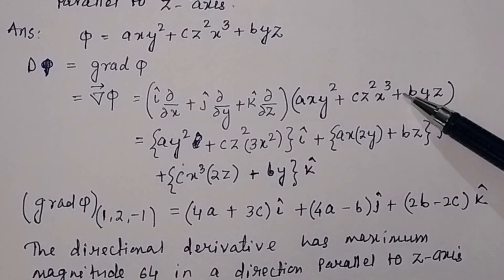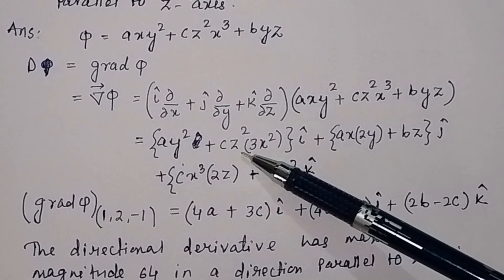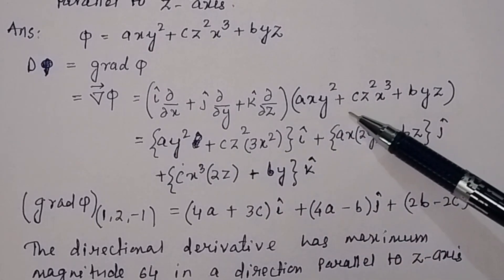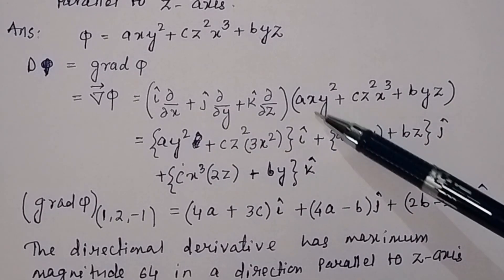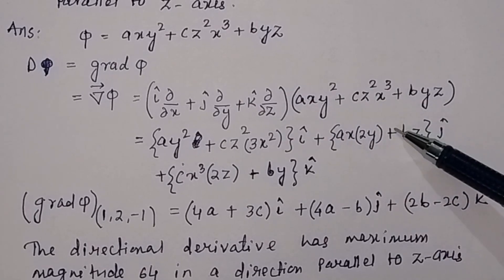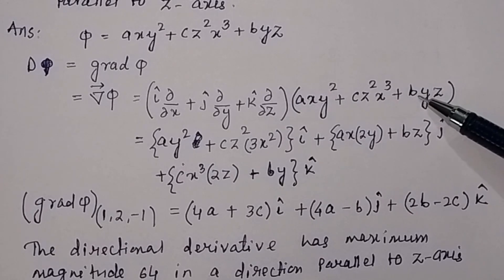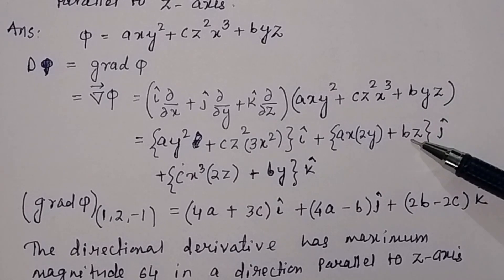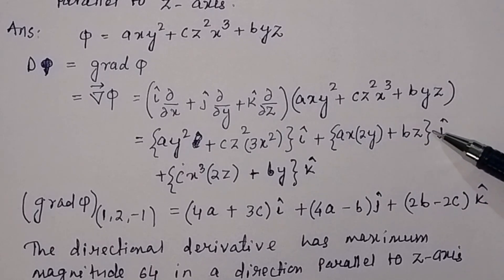For the third term byz, there is no x, so the partial derivative is 0. So the i-component is (ay² + 3cx²z²) i-cap. For ∂φ/∂y: the first term gives ax · 2y. For the second term cz²x³, there is no y, so partial derivative is 0. For the third term, ∂(byz)/∂y = bz.